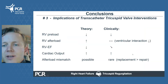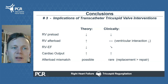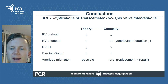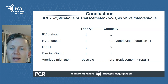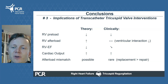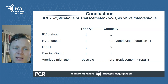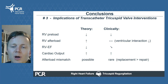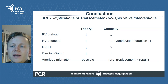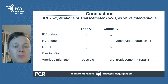In conclusion, interventional reduction of tricuspid regurgitation reduces RV preload and has a variable effect on RV afterload, which may be influenced by ventricular interaction. It is associated with a decline in volumetric RV function, but treating TR increases cardiac output. Acute RV failure after the intervention is rare, but occurs possibly more frequently after replacement as opposed to repair.